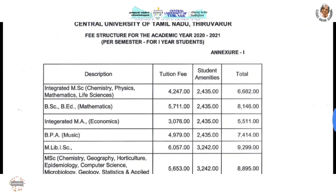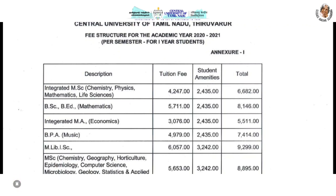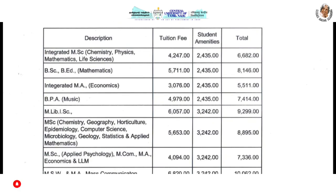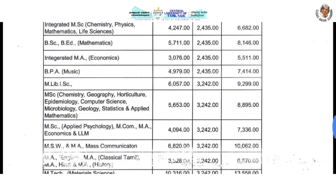The fees differ in each course. The first is the integrated MSc course — physics, mathematics, and life science. This integrated course tuition fee is per semester: 6,652. BSEB is 8,556. Integrated MA Economics is 5,556.